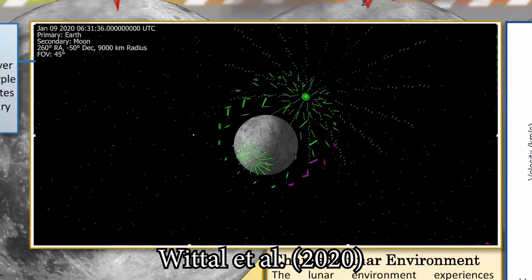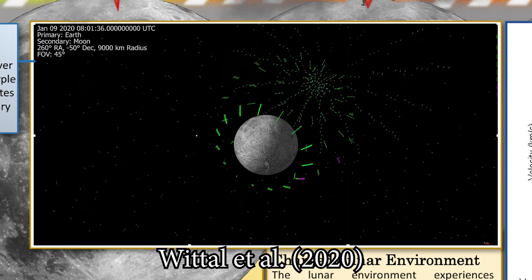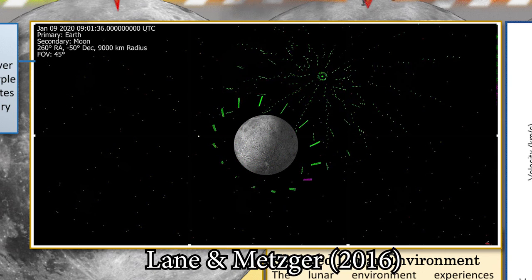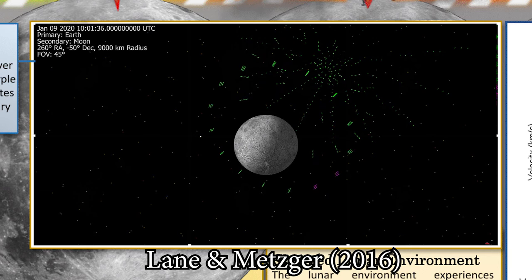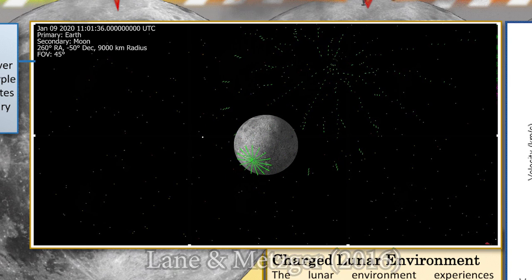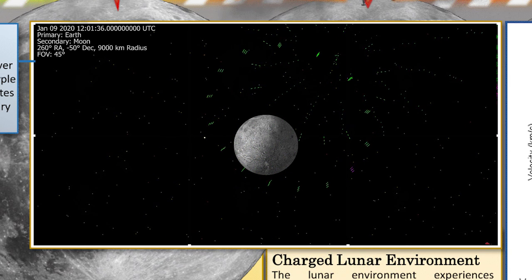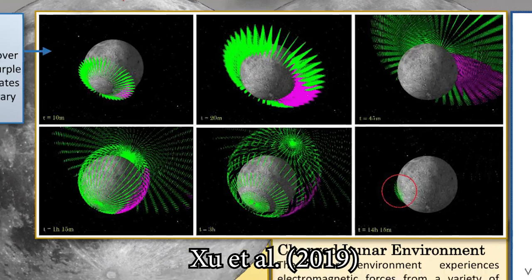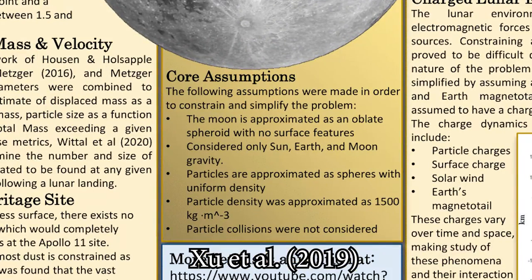Recent follow-on work has simulated the behavior of this dust, which had initial conditions constrained based on observations and simulations by Lane and Metzger. This work refined previous simulations by including estimations of charged environment around the moon based on data from the Artemis and other spacecraft. Details of these assumptions can be seen here.